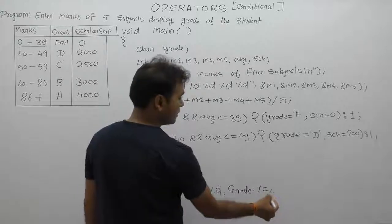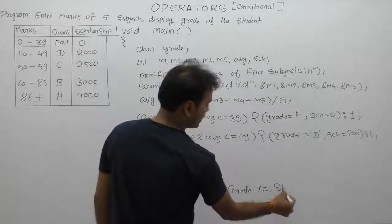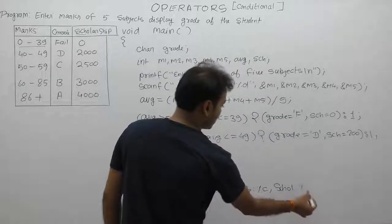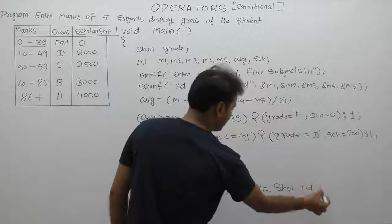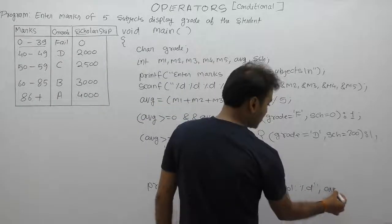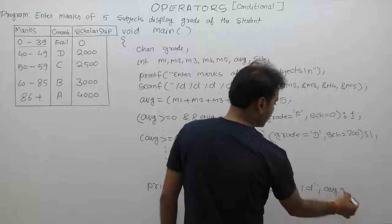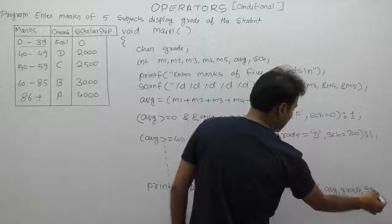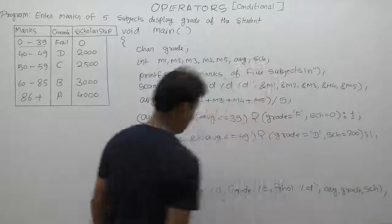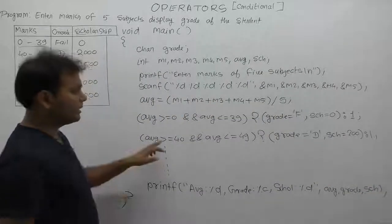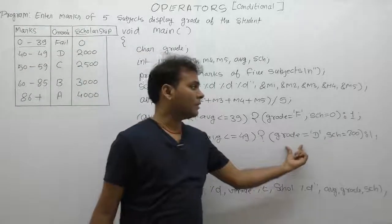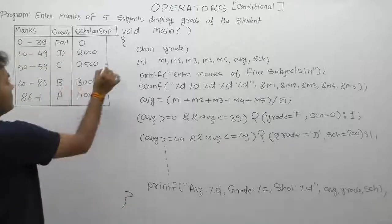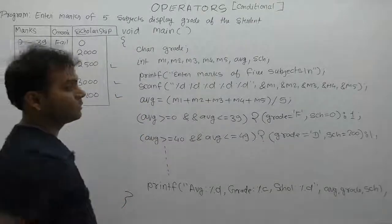Then scholarship - to display scholarship we use sch, percent d. So the output is: average, then grade, then scholarship sch. This means in this case when we write the remaining conditions and corresponding grade or scholarship values, total criteria are five. So you need to complete the remaining three cases.